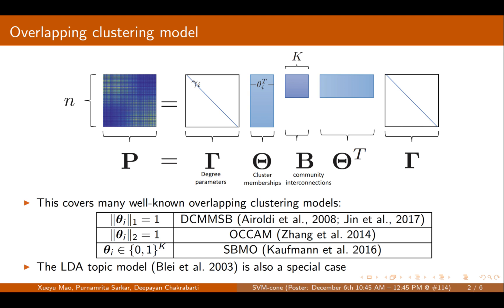The overlapping clustering model we work on is as this figure illustrates. It is an extension to the Stochastic Block Model. In this model, there is a community interaction matrix B, where each entry is the probability that there is an edge between community I and community J.